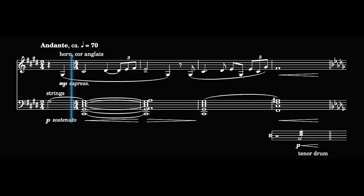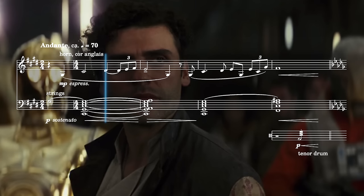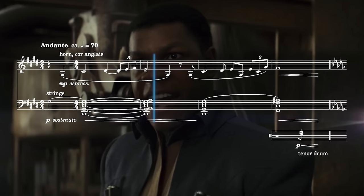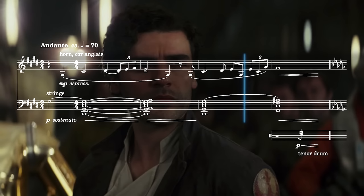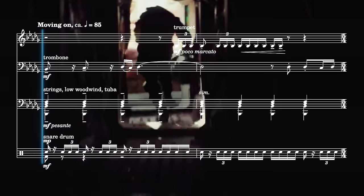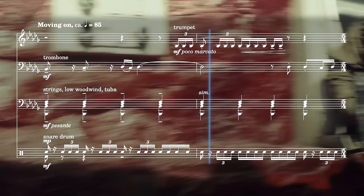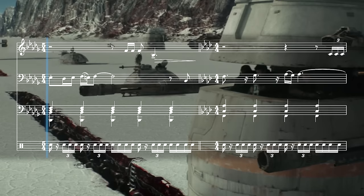It begins with the Force theme in C-sharp minor as Finn rallies the resistance to fight. This ends on an F-sharp major chord which pivots into B-flat minor for the first iteration of the resistance march.